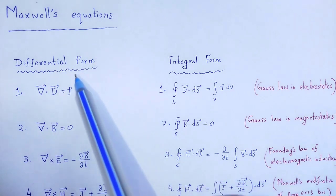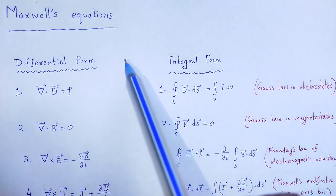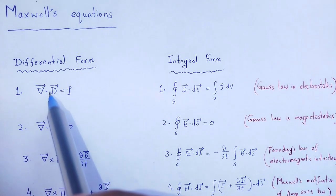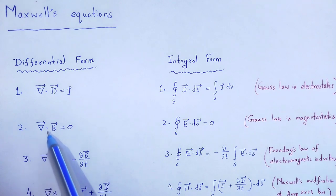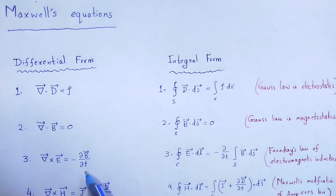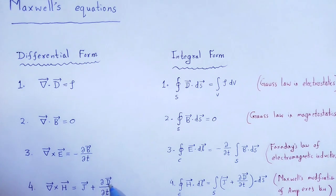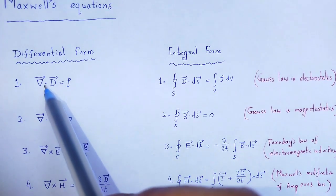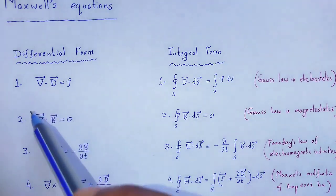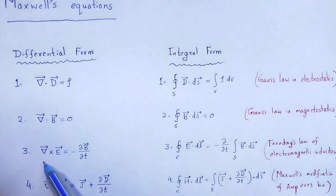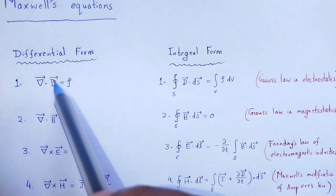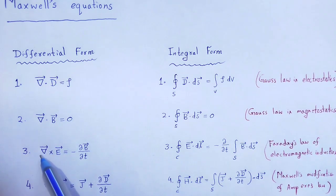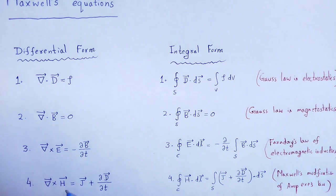Maxwell's equations in differential form: grad dot D is equal to rho; grad dot B is equal to 0; grad cross E is equal to minus del B by del t; grad cross H is equal to J plus del D by del t. The first two are divergence equations and the last two are curl equations.